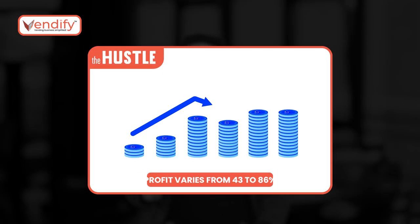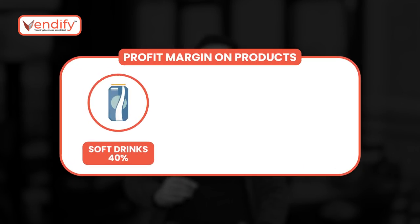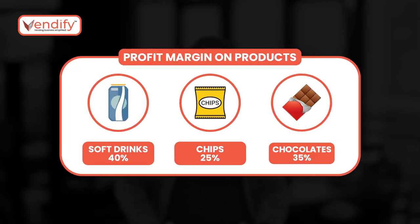According to a report by Hustle magazine, the profit in the vending machine business may vary from 43 to 86 percent, which means your monthly profit will be around 7,800 to 20,000 rupees. We did some research on profit margins on different products and analyzed that the profit margin on soft drinks is around 40 percent, while on chips and chocolates it's around 25 to 35 percent.